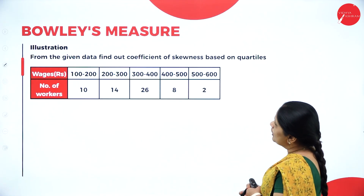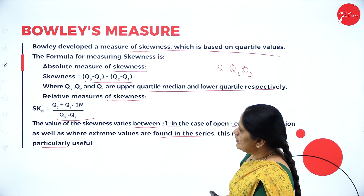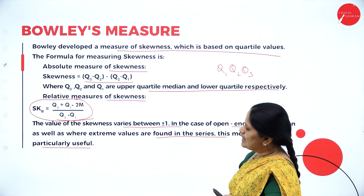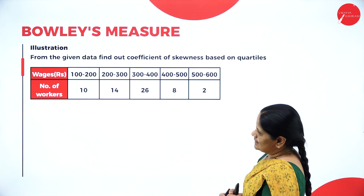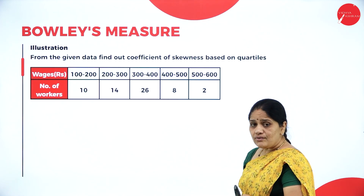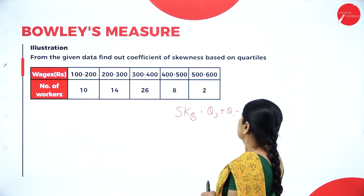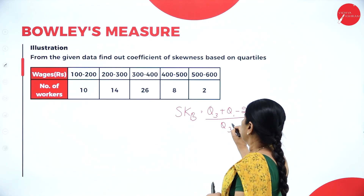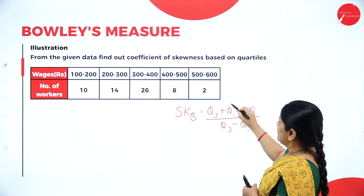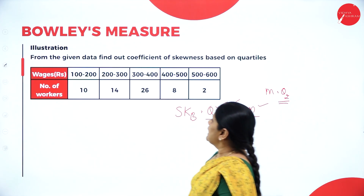Now we have an illustration. From the following data, find out the coefficient of skewness based on the quartiles. The formula for Bowley's skewness is: SKB equals Q3 plus Q1 minus 2 median, divided by Q3 minus Q1. As per the formula, we have to find Q1, Q3, and median (Q2).